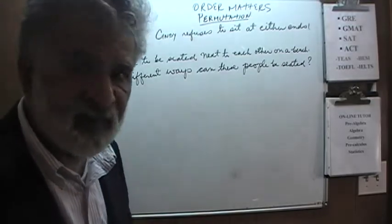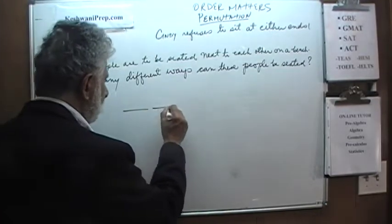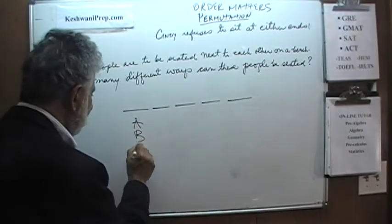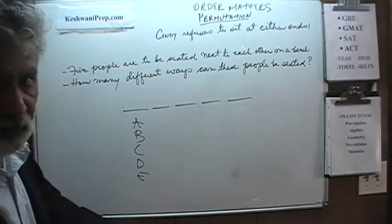So, we have five people in five spots: one, two, three, four, five. Let's give them names: A, B, C, D and E, which makes it easier.